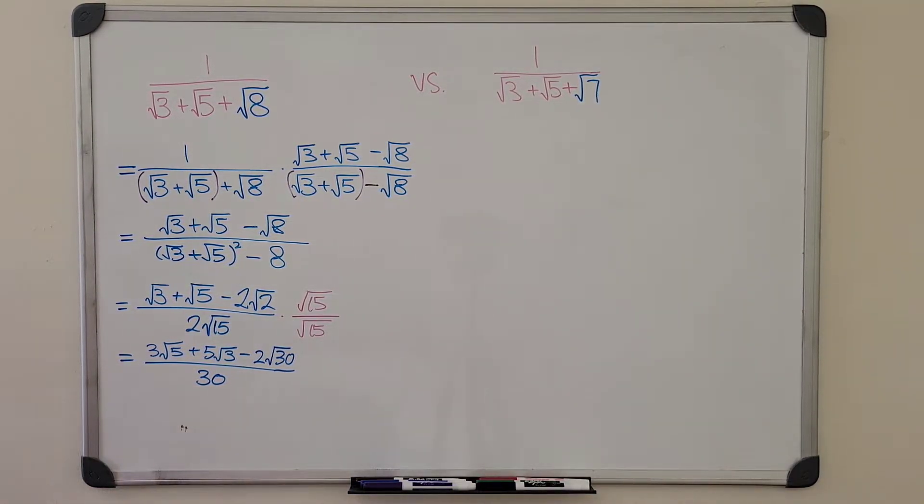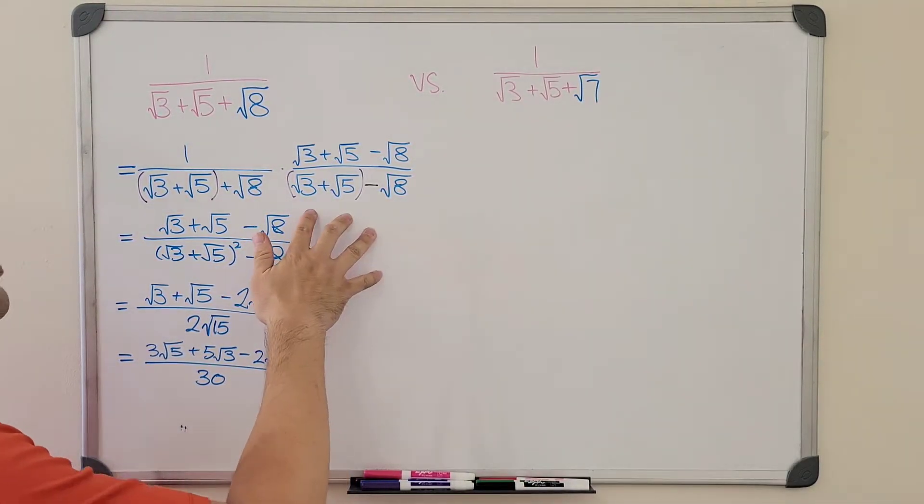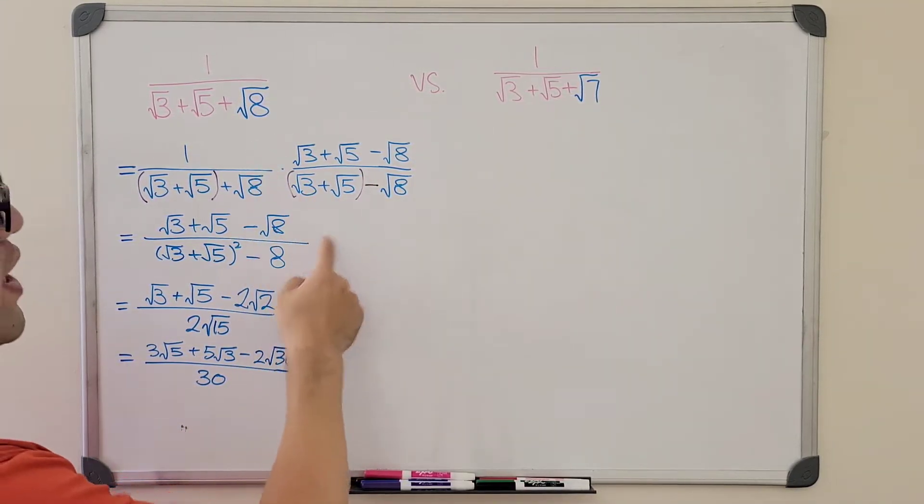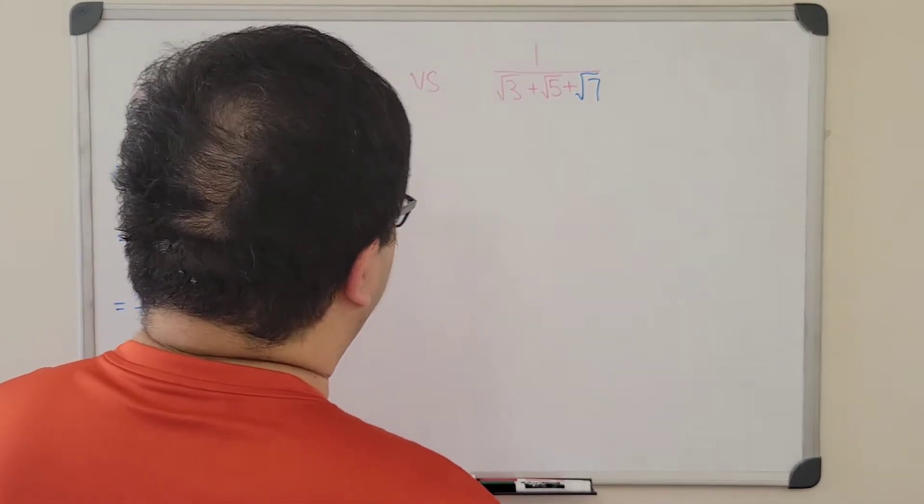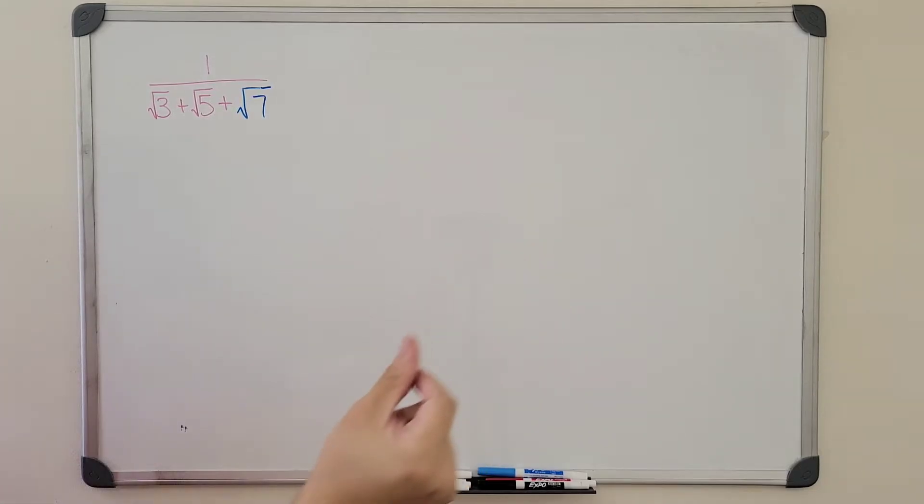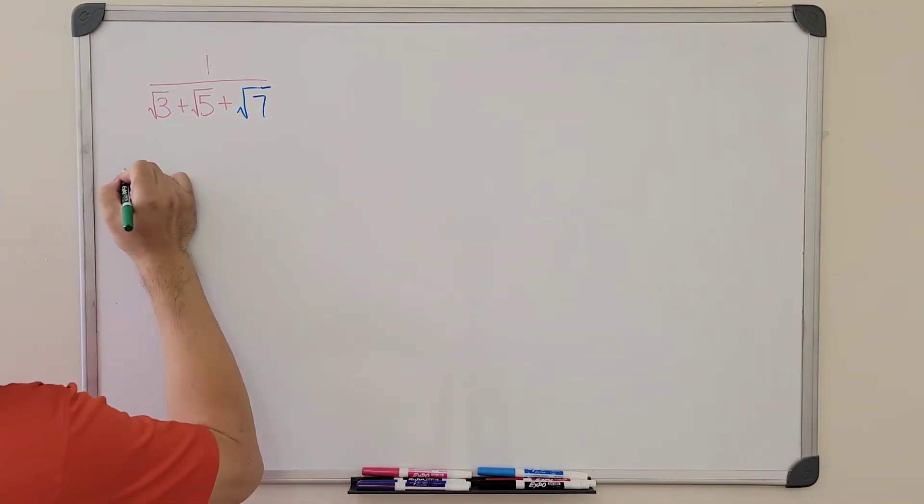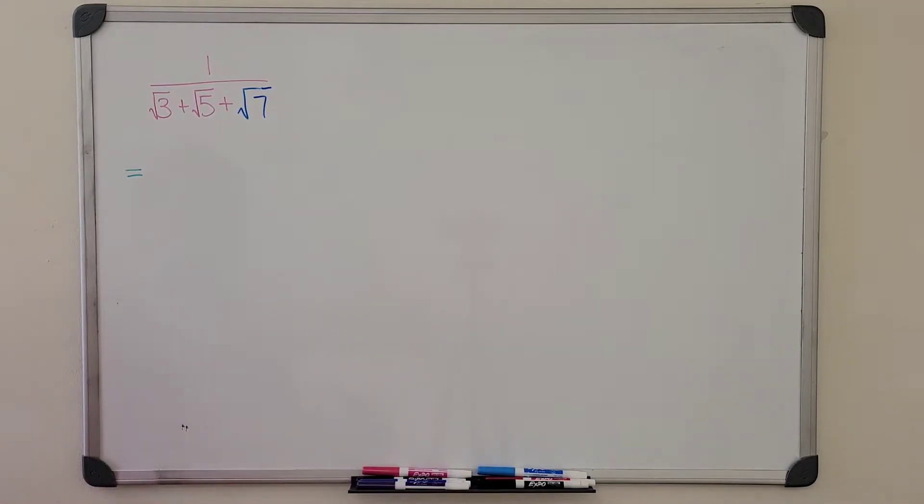How about the right-hand side? Why is it harder? Well, because we cannot use the same trick anymore. There is no way we can cancel out nicely as we saw from the left-hand side. So to do the right-hand side, we actually need a little bit more space to do it. Give me a second. Okay, so let's take a look at the second expression. 1 over radical 3 plus radical 5 plus radical 7. What do we get?